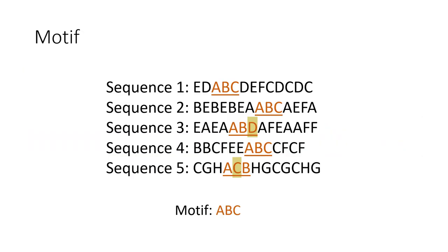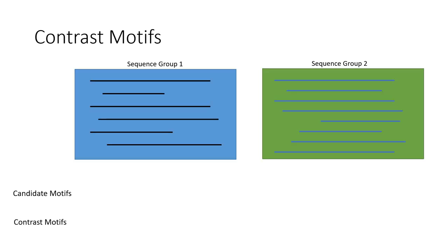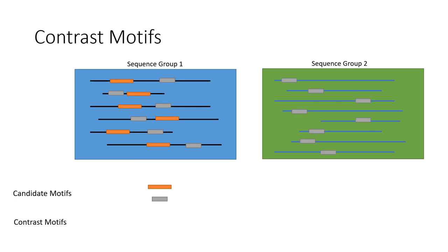Our approach is called contrast motif discovery. Motifs are short subsequences that occur frequently with possible mutations. Contrast motifs are motifs that are significantly closer to one group of sequences versus others. Assuming there are two groups of sequences, contrast motif discovery first finds candidate motifs for each group and then discovers contrast motifs that are significantly closer to one group compared to others.